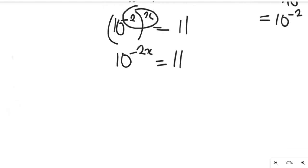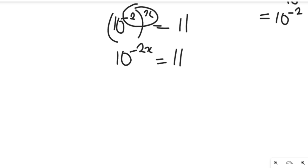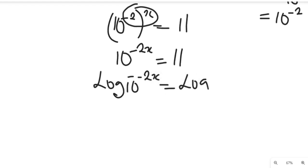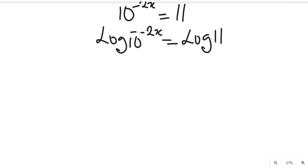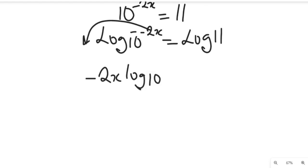Good. So at this point, all we want to do is take the log of both sides. We take the log of 10 to the power of minus 2x equal to log of 11. Now according to the law of logarithm, the exponent comes down in front, so we'll have minus 2x times log of 10, equal to log of 11.